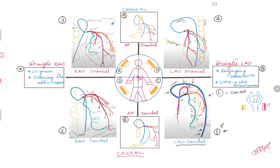This view is good for looking at the left main, the ostium of the left main, and the bifurcation or trifurcation of the left main into LAD, ramus, and left circumflex. You can really see the ostium of LAD, left circumflex, and in this case the ramus intermedius. You can also see the proximal segments of the great arteries, mostly the LAD and the left circumflex.